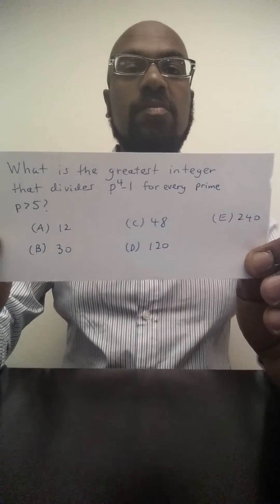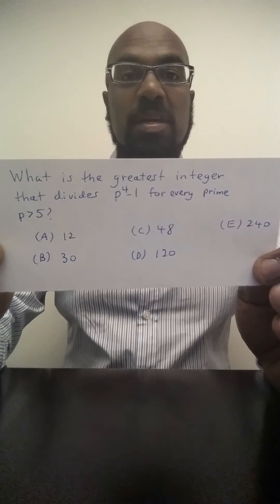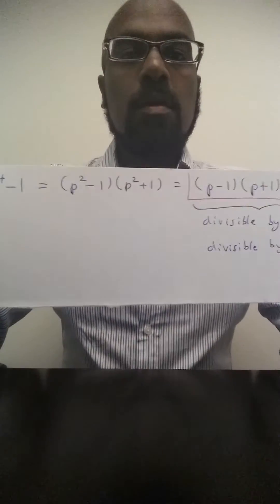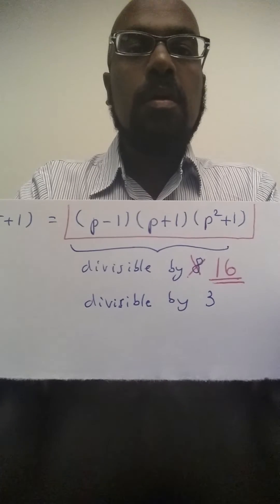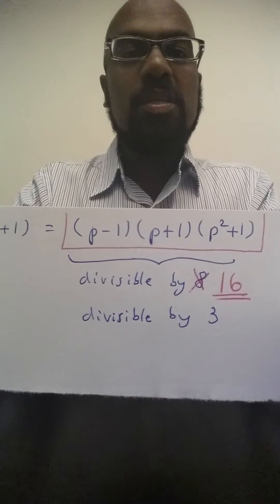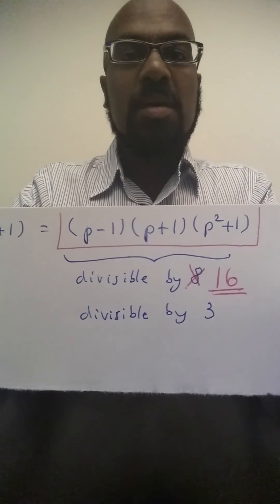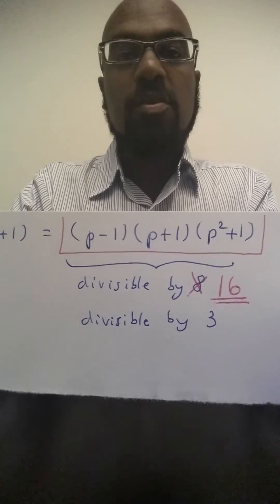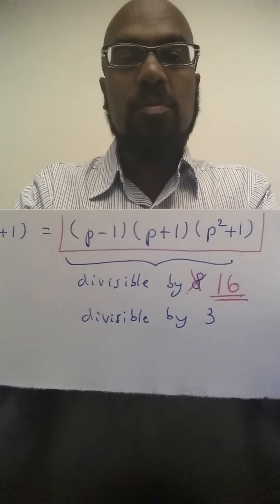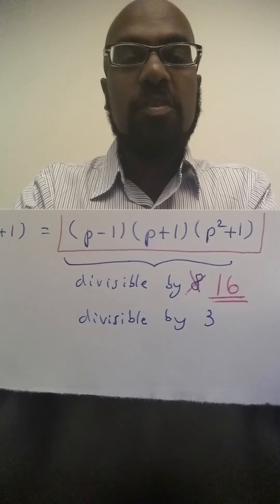240 is 5 times 48. So this begs the question to look at divisibility by 5. So the question is, is this divisible by 5? One thing you could do is look at the various remainders p can have upon divisibility by 5 and examine this expression. But in fact we can do something else.